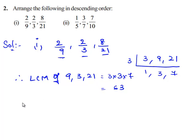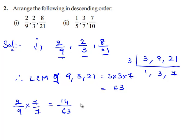Now we shall obtain the equivalent rational numbers for the given 3 rational numbers. For 2 by 9, to obtain the common denominator 63, we multiply by 7 on both numerator and denominator, giving us 14 by 63. For 2 by 3, we multiply by 21 on both numerator and denominator, giving us 42 by 63.